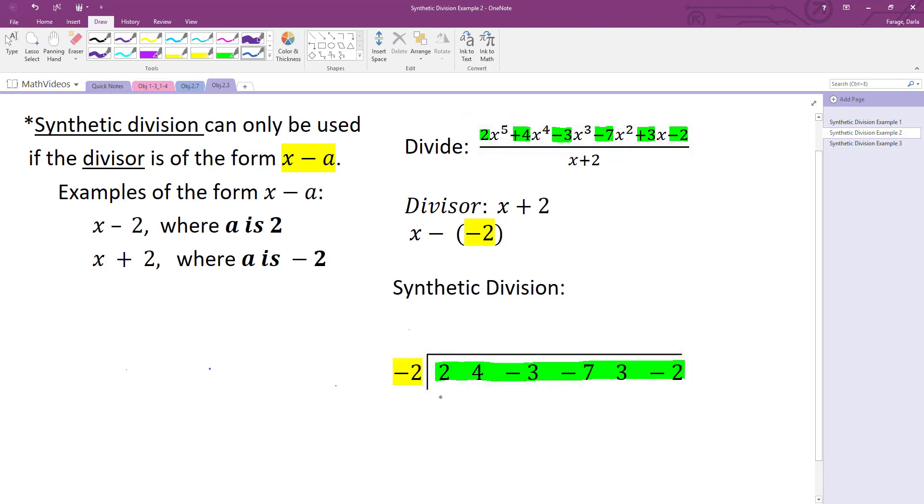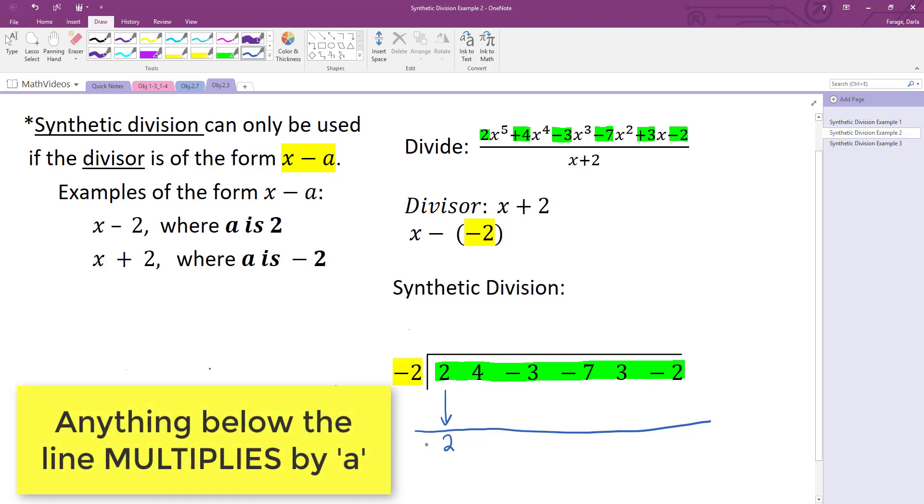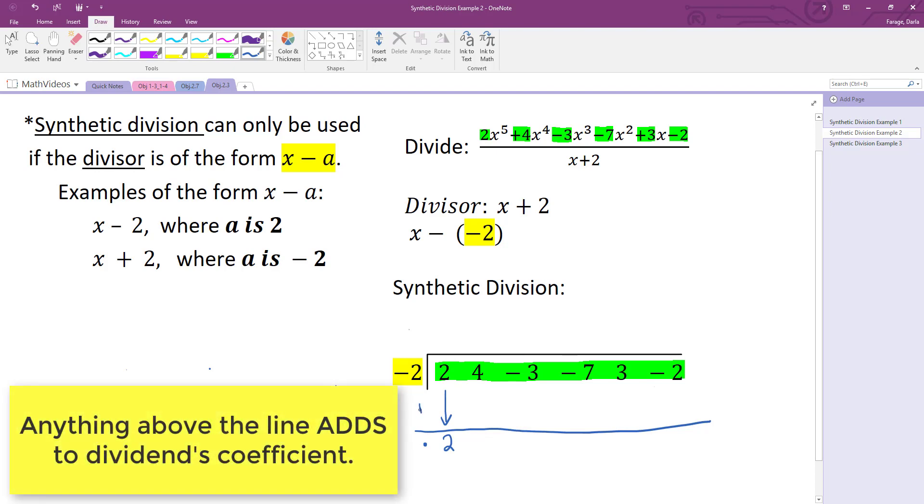What we do with synthetic division is we pull down the very first coefficient. So we don't do anything with it other than we pull it directly down. And then what I would like you to do is draw a horizontal line across. And anything that falls below this horizontal line will multiply by our a value, negative 2. And anything above this line will add together with our coefficients.